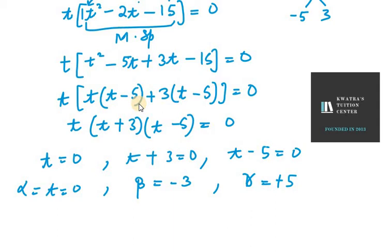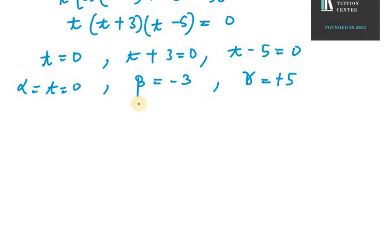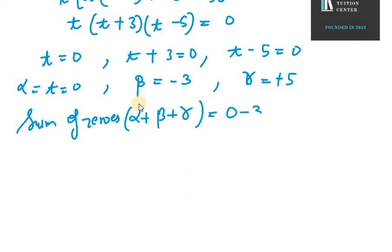So now what we need to do is we need to find the sum of zeros. Sum of zeros for cubic polynomial is alpha plus beta plus gamma. Alpha is 0, beta is minus 3, gamma is 5. So sum of zeros is 2.